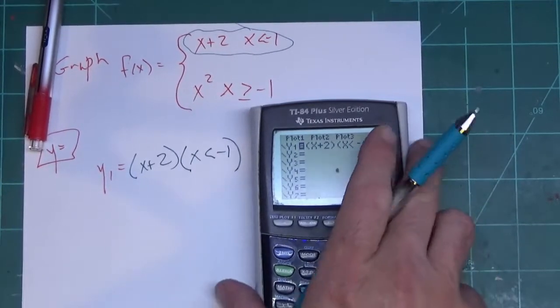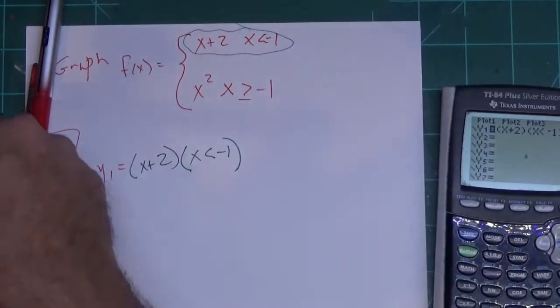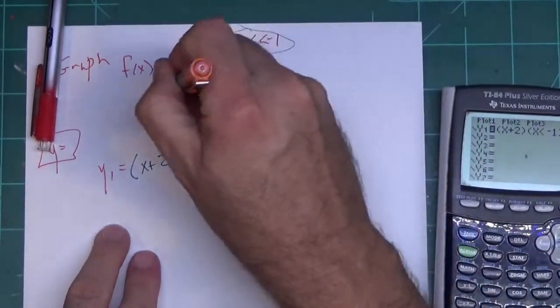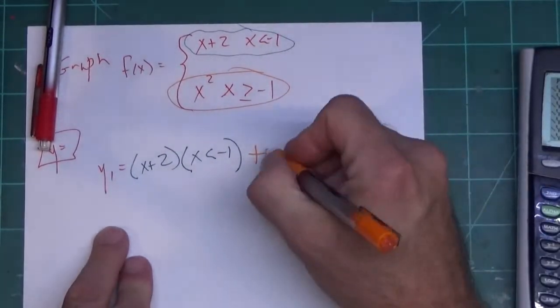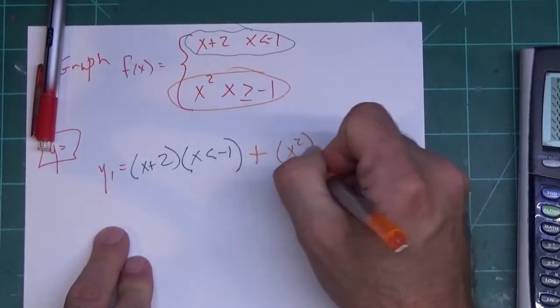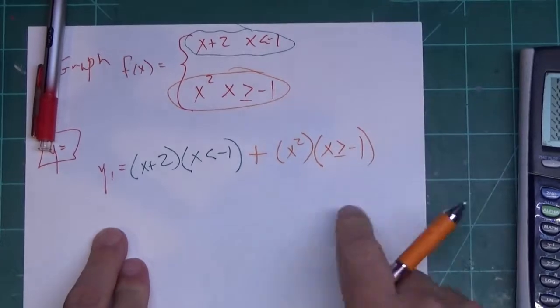Now to get the second part in the calculator, to get this part right here, what I need to do is put a plus sign and then put it in parenthesis, X squared, close parenthesis, and put X greater than or equal to negative 1 in parenthesis over here.